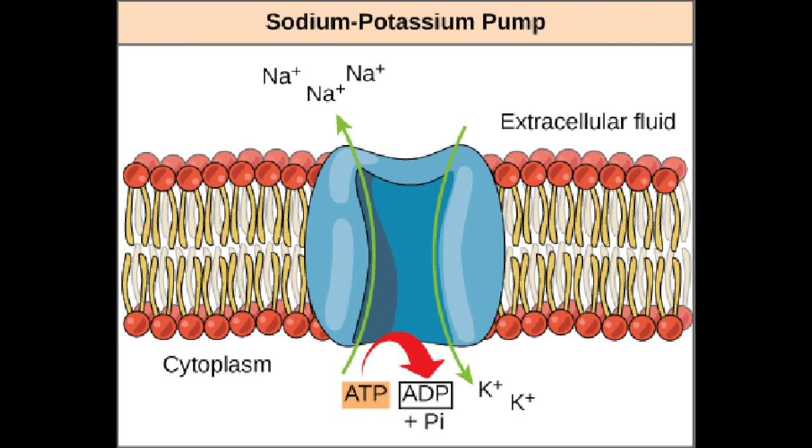Your sodium-potassium ATPase pumps out three sodium ions to the outside of the cell and pumps two potassium ions into the inside of the cell. This causes a sodium gradient — you have a high sodium concentration on the outside and a high potassium concentration inside. Your potassium leak channel, which allows ions to leak across the membrane according to the gradient, basically allows potassium to flow down its gradient and out of the cell. This process causes the loss of many positive ions, leaving the interior of the cell with a net negative charge — referred to as the resting membrane potential.